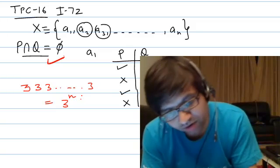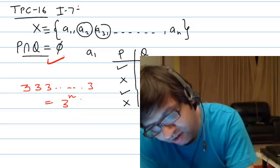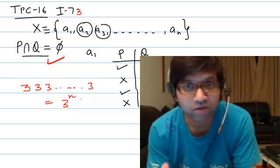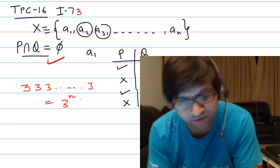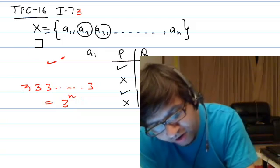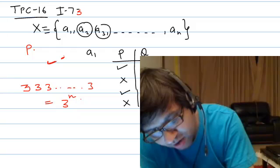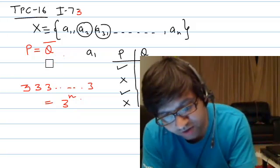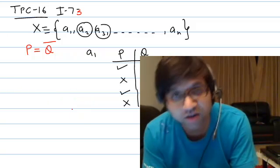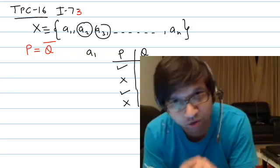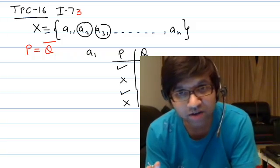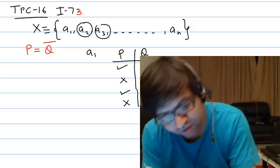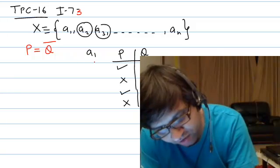Now looking at Illustration 73 — the question type is the same. Set X is given with n elements, all different from each other, and we have to form subsets P and Q. This time the condition is different: instead of P intersection Q equal to phi, we have to find the number of ways to form P and Q such that P equals Q complement. This means P and Q should be complementary sets — elements not in P should be in Q, and elements not in Q should be in P. So all elements are present in either P or Q, but not both.